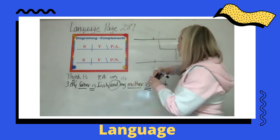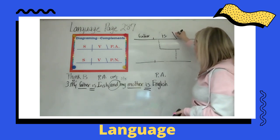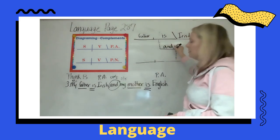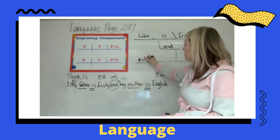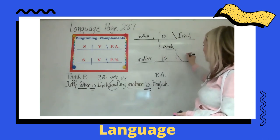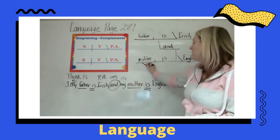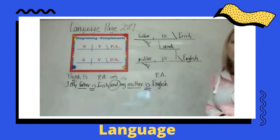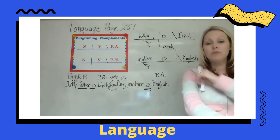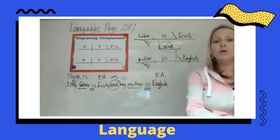On the top one, we have 'father' on the left, 'is' on the right, and then Irish — we do our diagonal line and write 'Irish' for the predicate adjective. Then we have 'and,' then 'mother' and 'is,' and then our other diagonal line with 'English' for the predicate adjective. We also have our regular adjectives 'my' for both father and mother. Remember, when you have a subject-verb and another subject-verb, we do this because it's like having two complete sentences joined together in the middle.